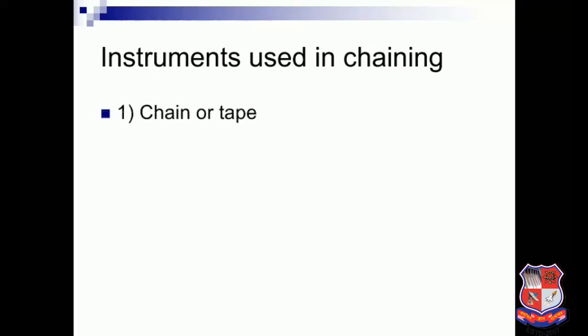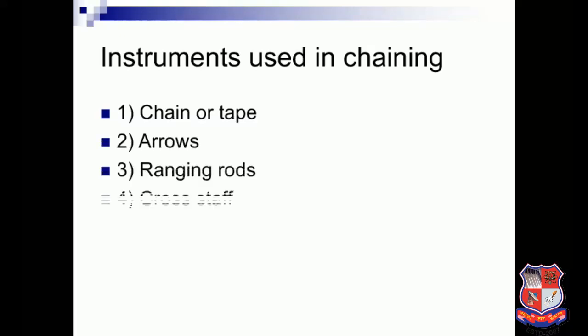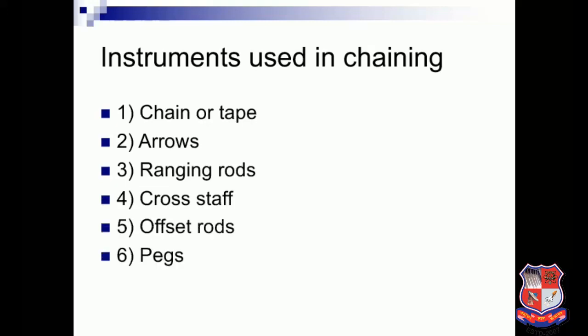The instruments used in chaining are: first, chain or tape; second, arrows; third, ranging rods; fourth, cross staff; fifth, offset rods; sixth, pegs; and seventh, plumb bob. These are the necessary instruments used in chaining.